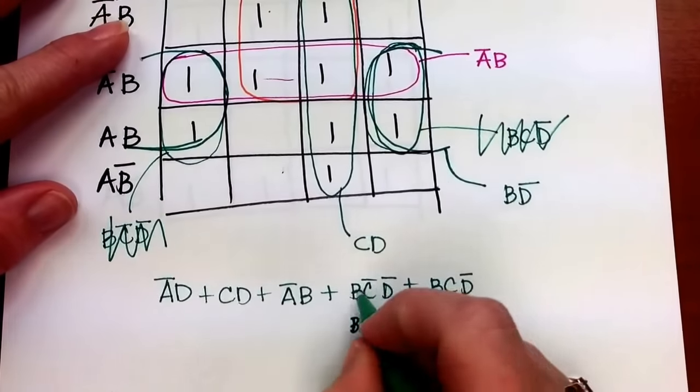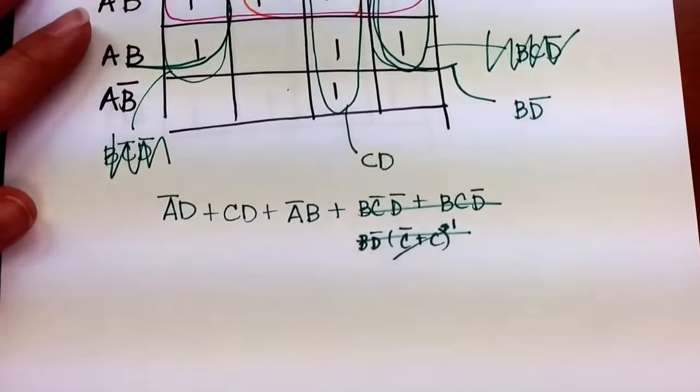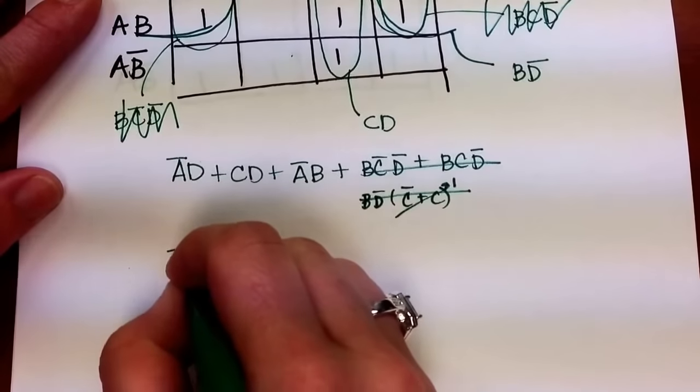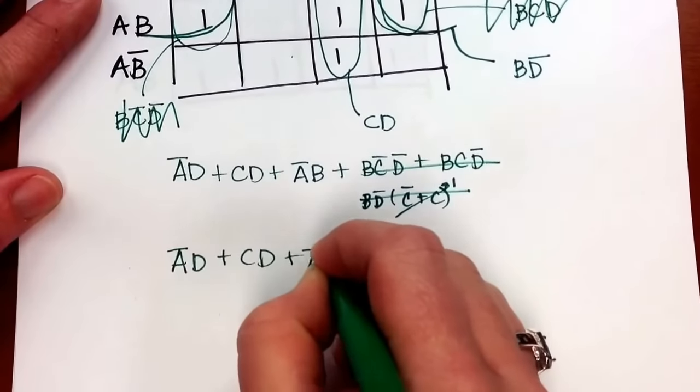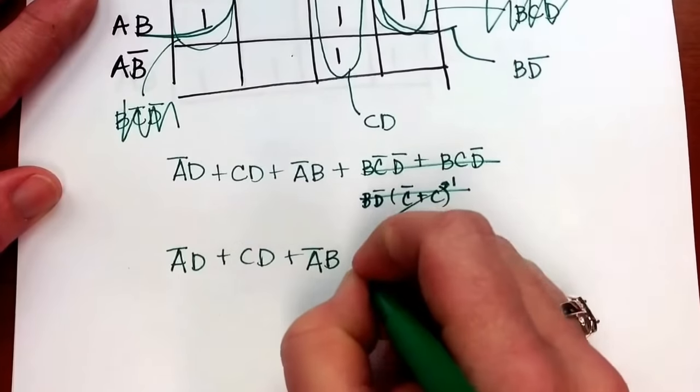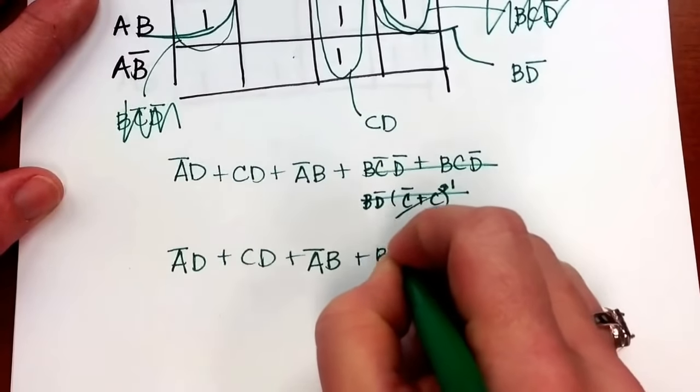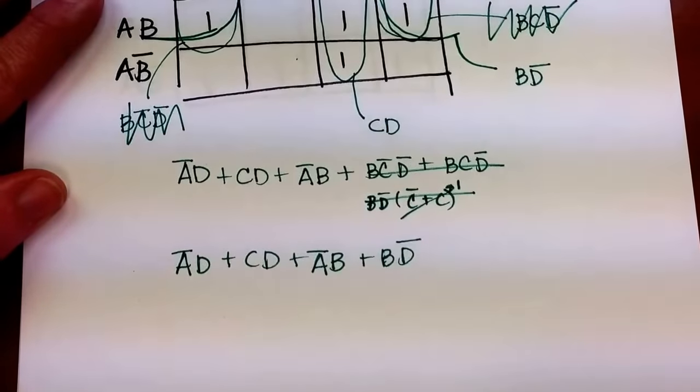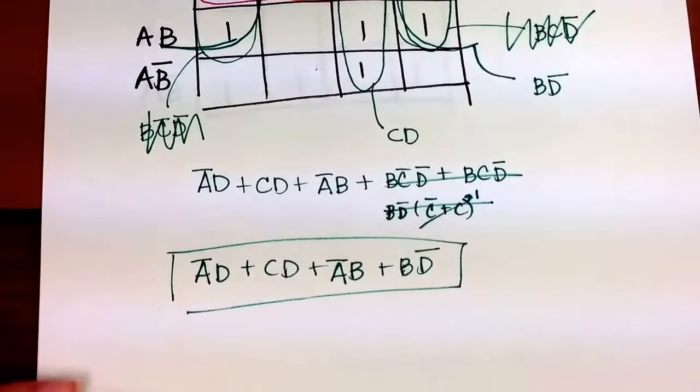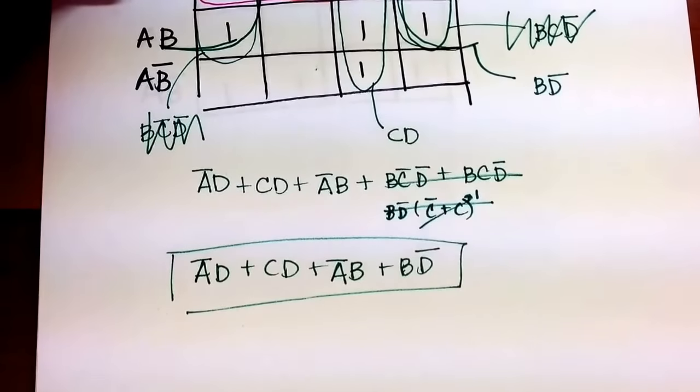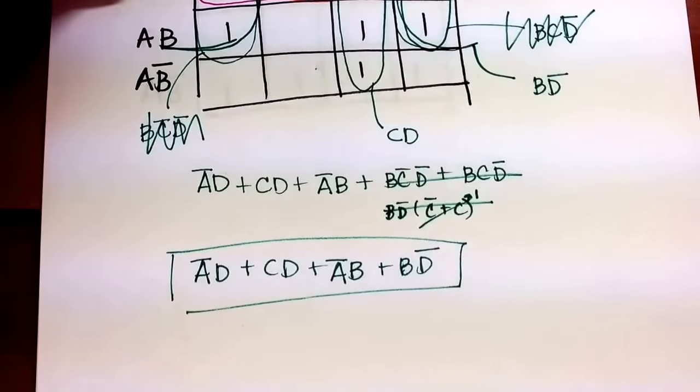So in fact the expression is not A D or CD or not A B or B not D. So I hope that helps you and I hope you can feel a little more comfortable with K-maps.